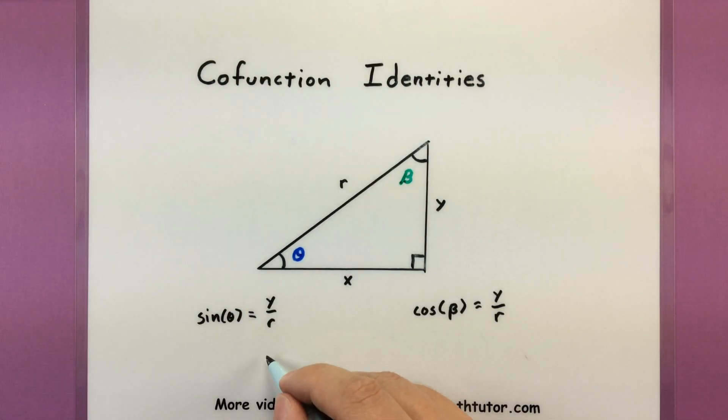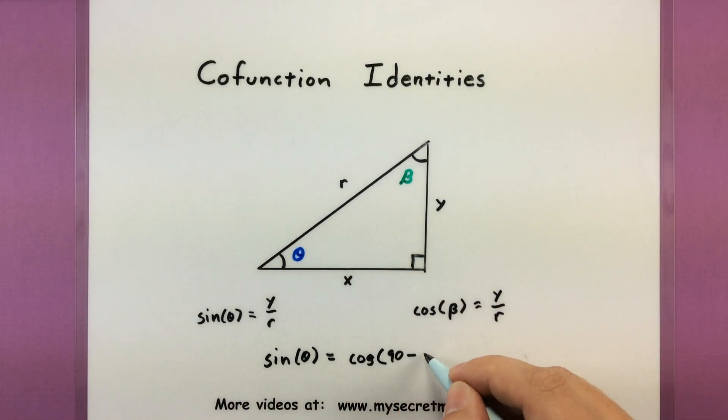The way we make this more precise is we say suppose I want to find something like sine of the angle theta. That's really going to be the exact same value I'd get if I looked at cosine of 90 minus the value of my original angle.